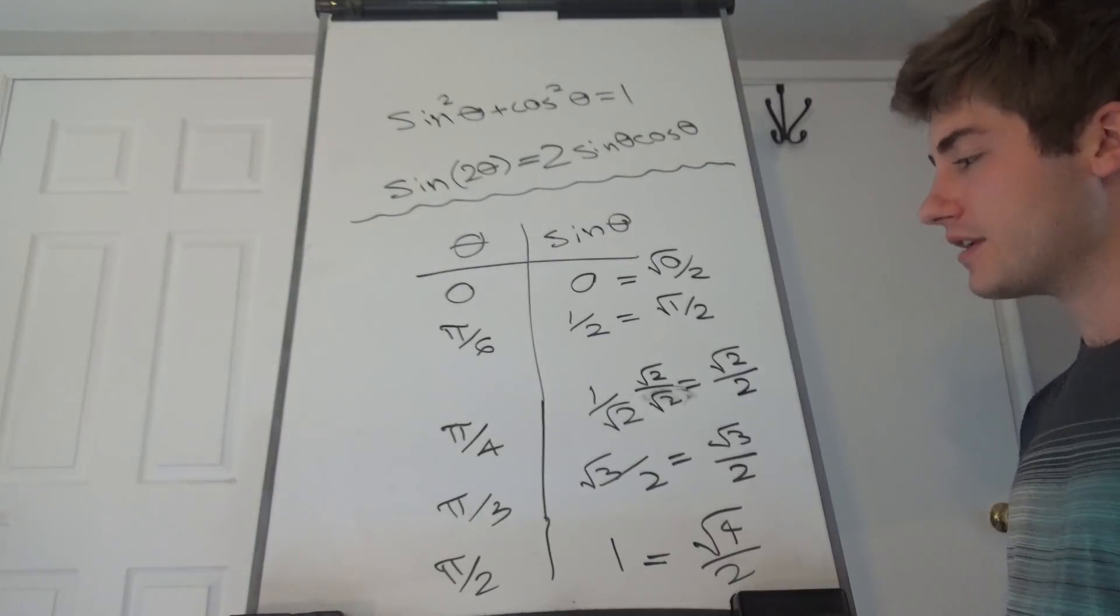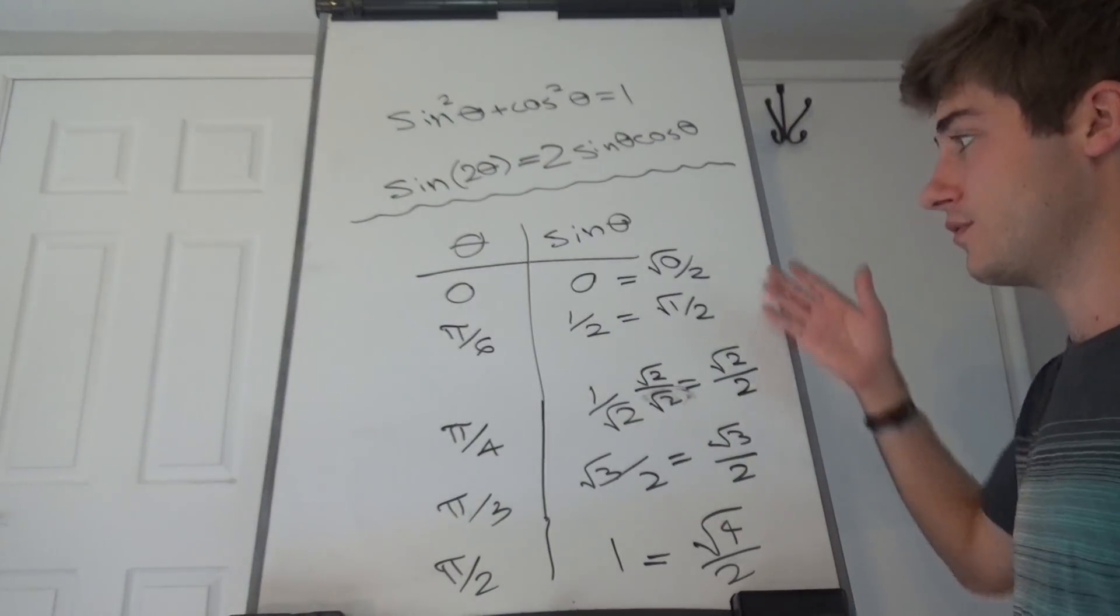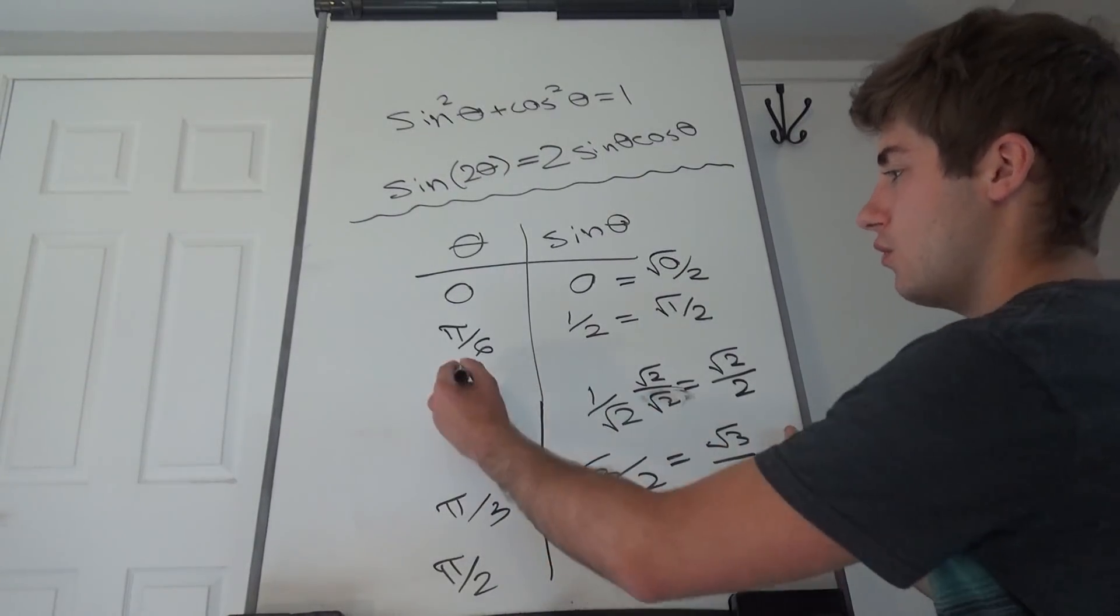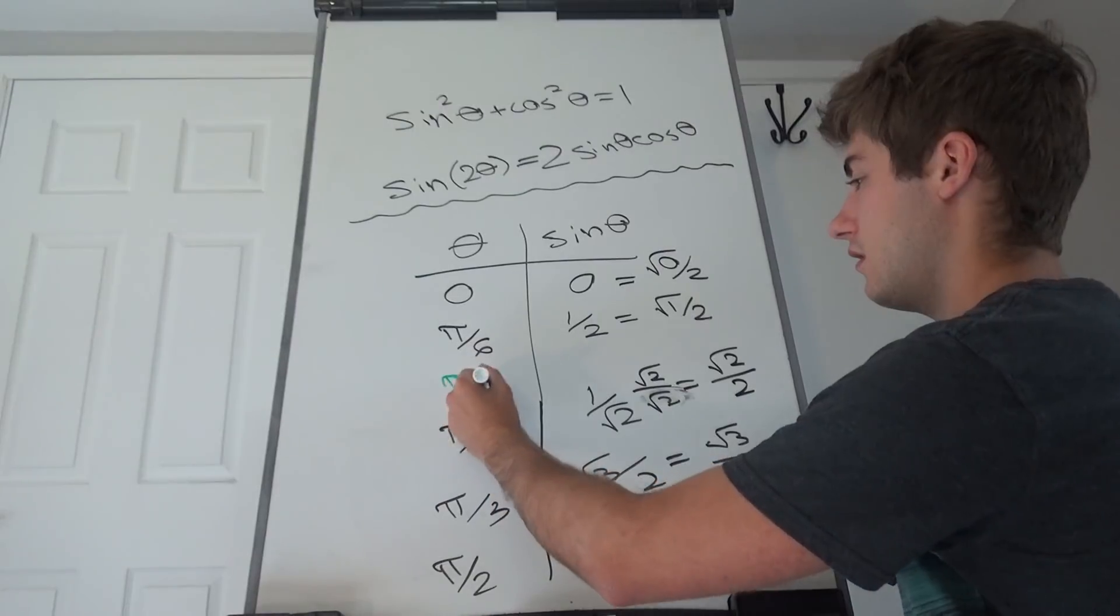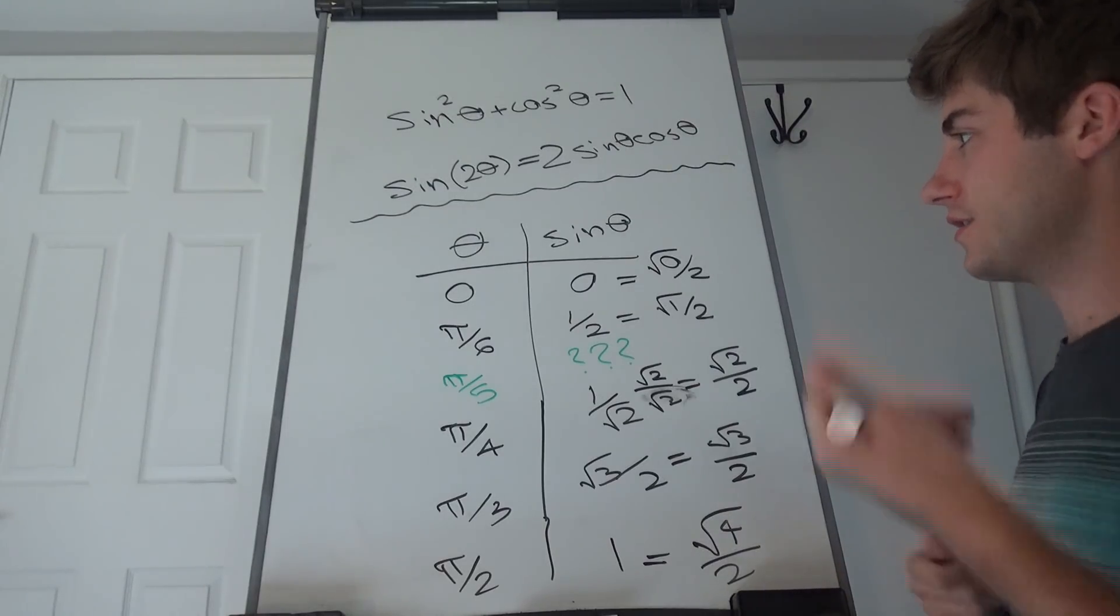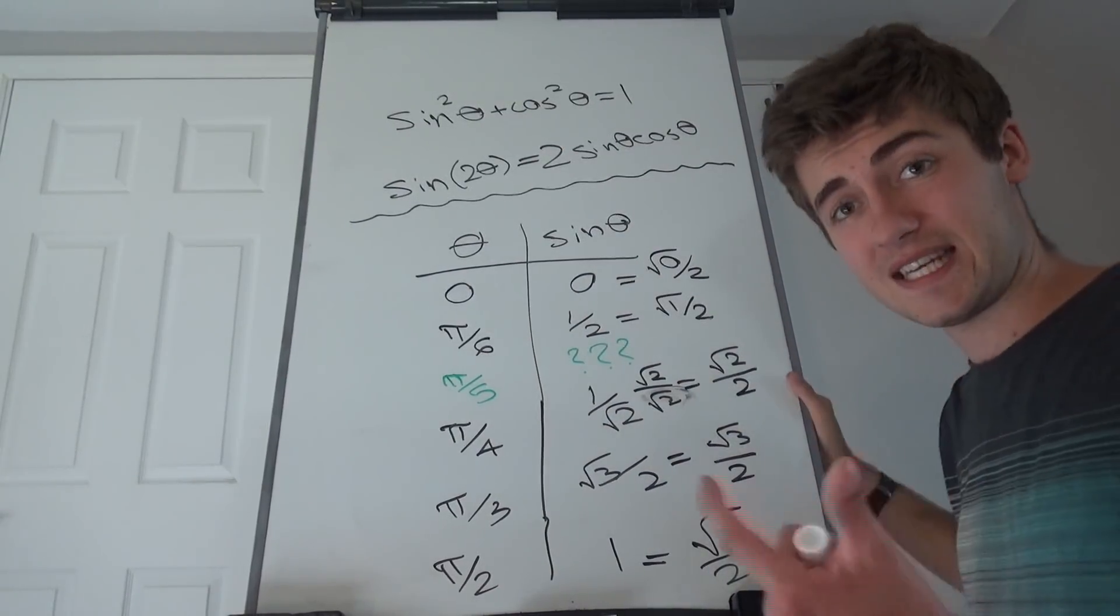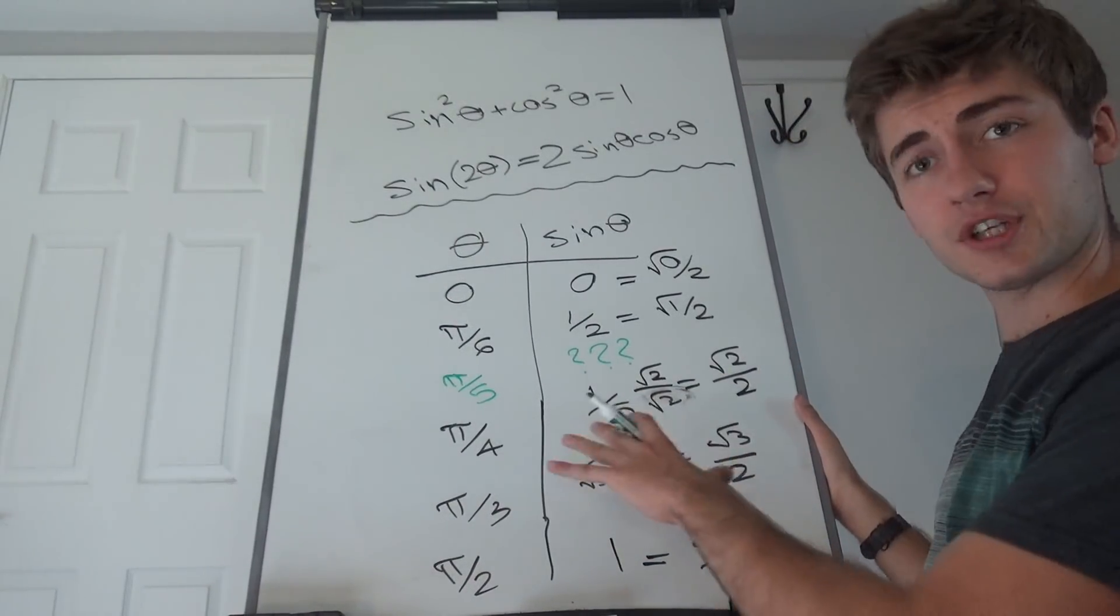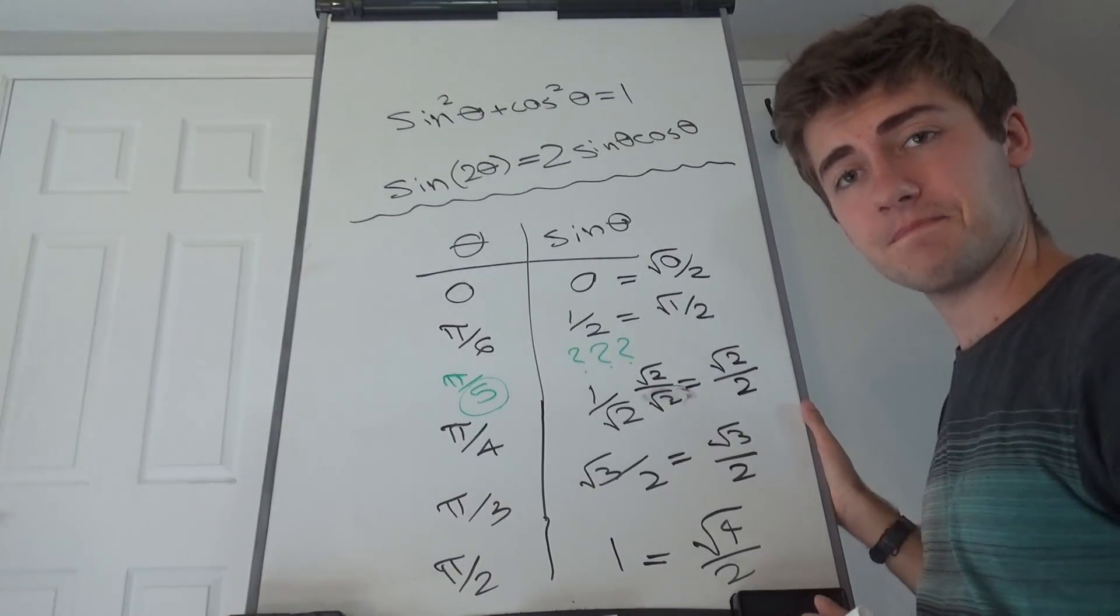But that's not what I wanted to talk about today. I wanted to fill in a gap, because even though this nice pattern is completely fulfilled, every integer from 0 to 4 is seen, square-rooted and divided by 2, but if we look at our list, we don't have pi over 5. Why not pi over 5? Where, dare I ask, is pi over 5? What is the sine of pi over 5? Because we know this is 0 degrees, 30 degrees, 45 degrees, 60 degrees, and 90 degrees, so what's pi over 5? It's 36 degrees. So, I don't know, it seems like a nice angle.